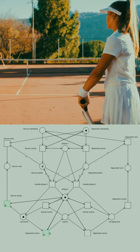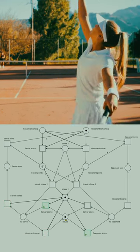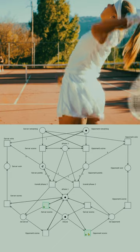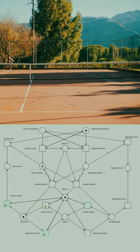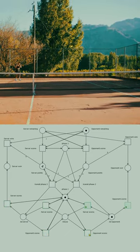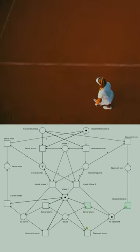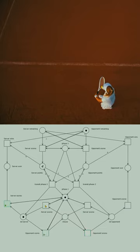In phase two we have a neutral state called deuce and one advantage state for each player. Theoretically this phase can last forever. The game can only be won if the player in the advantage stage scores.